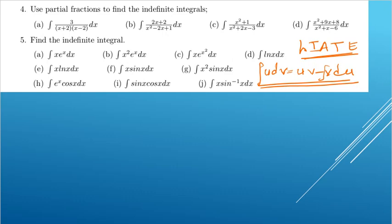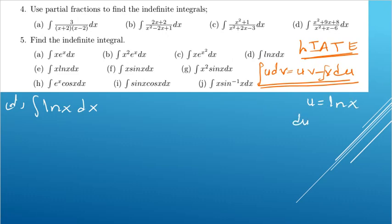Let's do example d. We have the integral of ln(x) dx. Using LIATE, logs come first, so u equals ln(x), and du equals 1/x dx. dv equals dx, and integrating gives v = x.